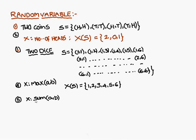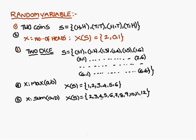I will give one more example. Here I am defining the random variable as the sum of the numbers in the ordered pair. So x of s: for (1,1), one plus one gives two. Then you get three, four, five, six, seven. Similarly you get eight, nine, ten, eleven, twelve — six plus six equals twelve. So starting with two, three, four, five, six, seven, eight, nine, ten, eleven, twelve. This is how the random variable x is defined.